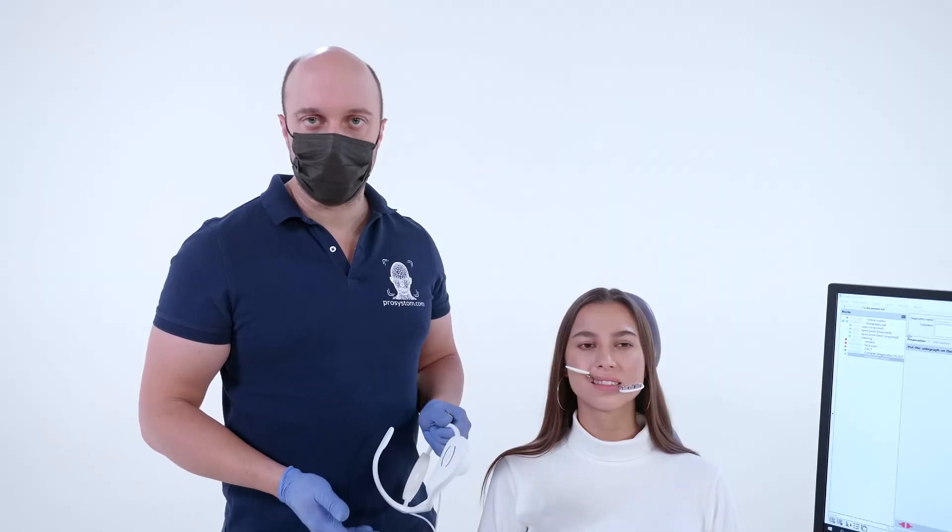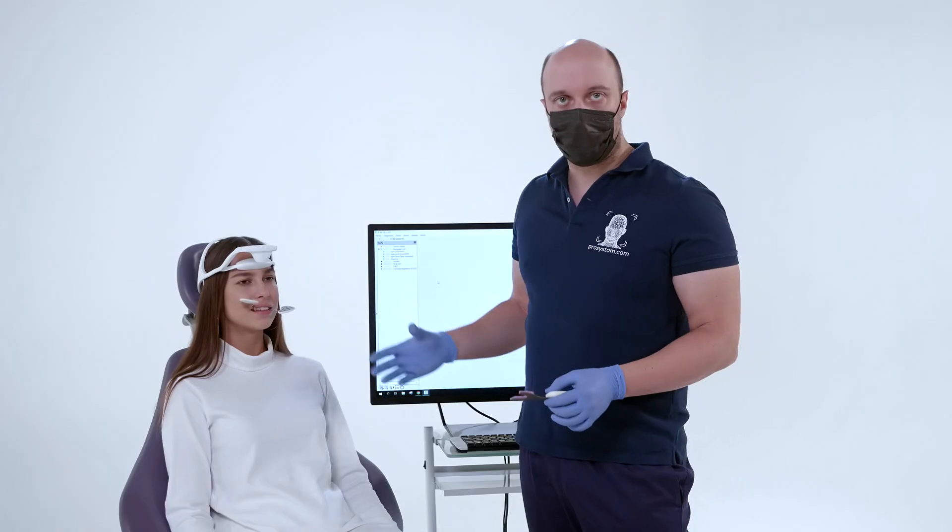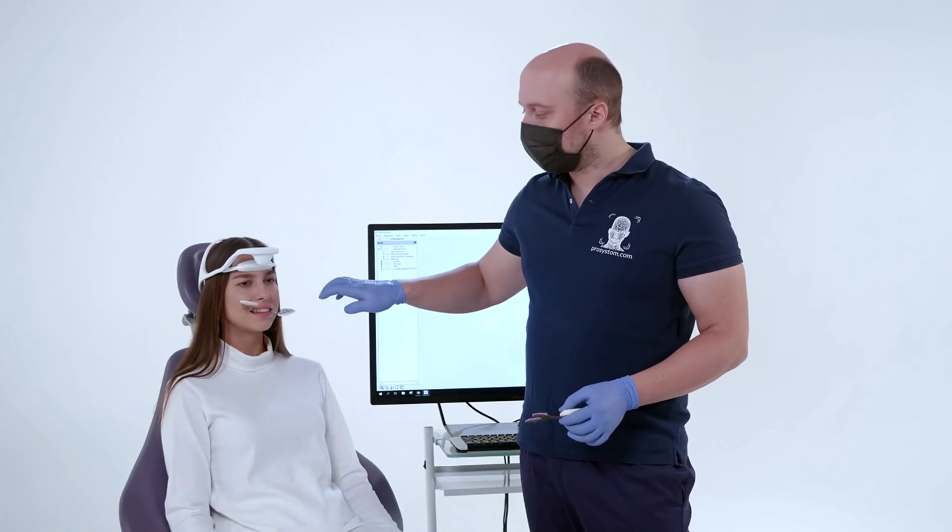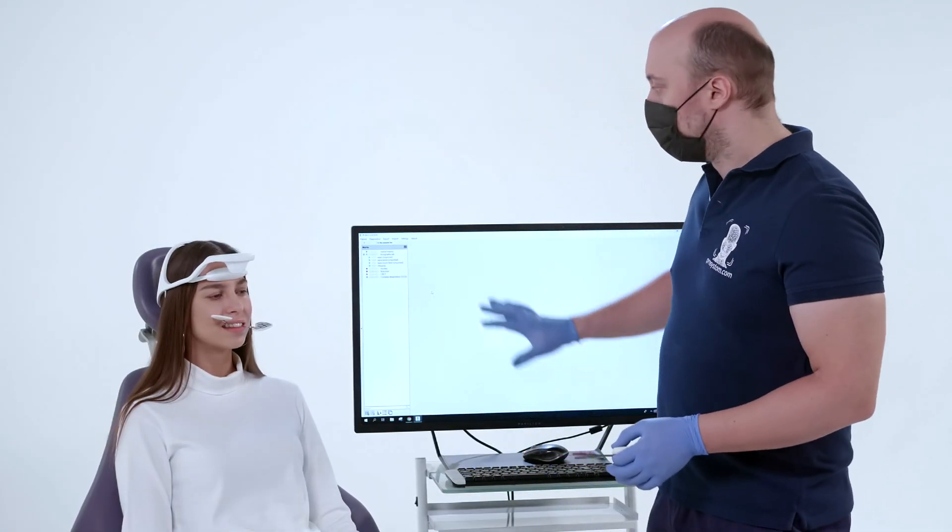We start Axiography. The device is connected. We check how the markers are fixed. The markers should be approximately horizontal. We connect the Axiograph to the USB port.